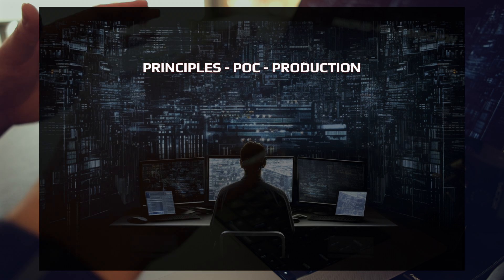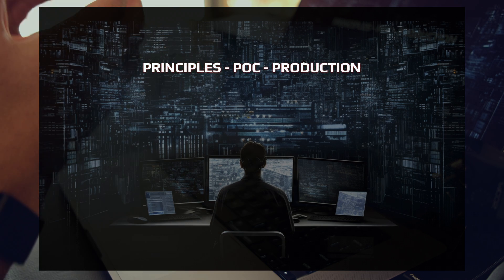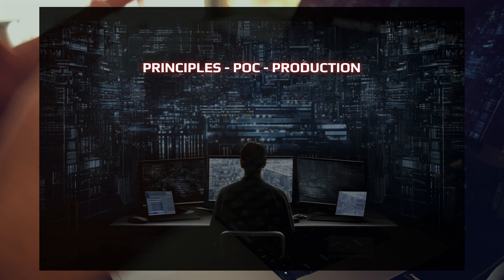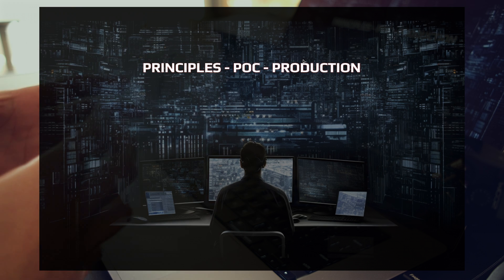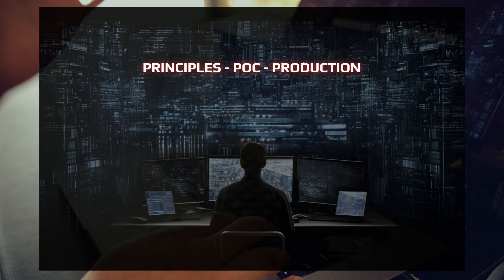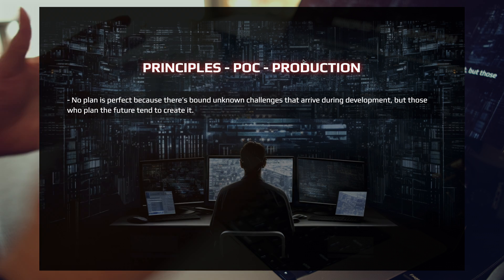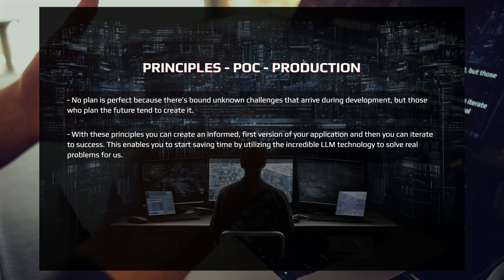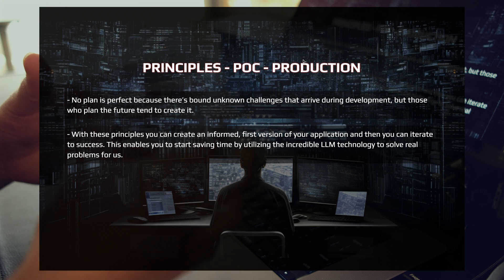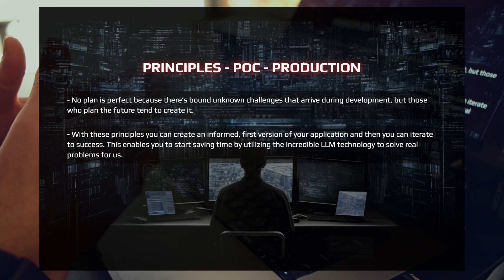With these principles, you can apply them, create a proof of concept, and then create a production version — and that's exactly how we're going to formulate these three videos. This video is all about the principles we're going to use to build our multi-agent system. In the next video, we're going to show off the proof of concept, and then we're going to productionize it and share it with the world. No plan is perfect because there are bound to be unknown challenges during development, but those who plan the future tend to create it. Principles allow you to get to your first version with the fundamental truth of what you're trying to build. Keep your principles close throughout development, especially in that first version. Once you have your first version, you can iterate to success.